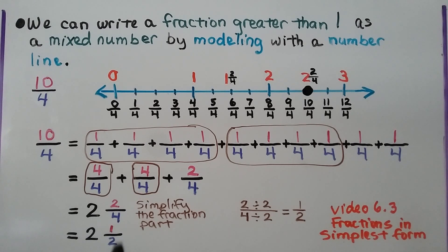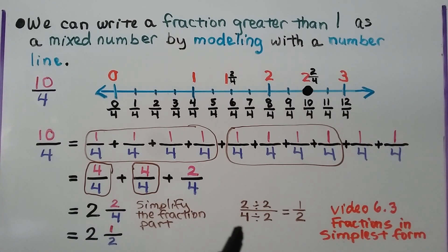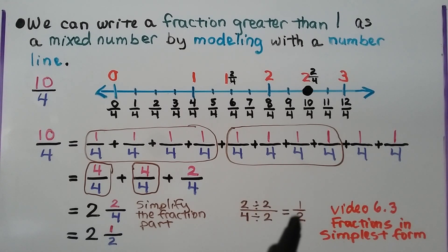We can simplify the fraction part. We ignore the whole number and look at just the fraction. We find a common factor for two and four: two divided by two is one, four divided by two is two — we get one half. Now putting it back with the whole number, we have two and a half.